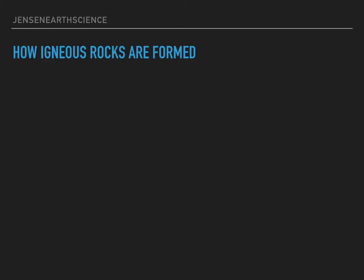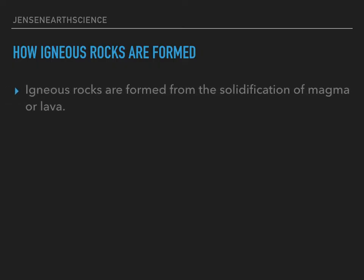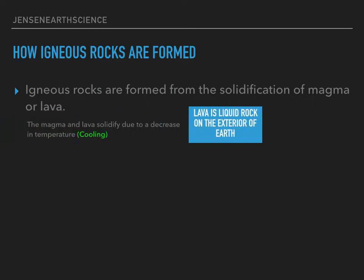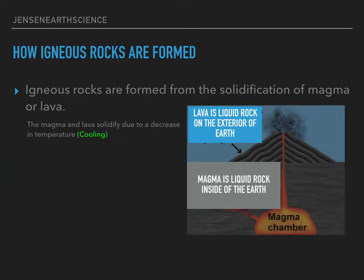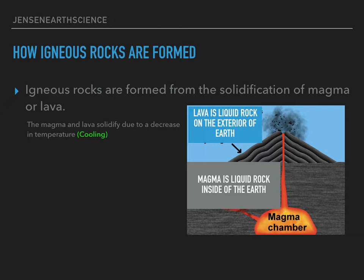How are igneous rocks formed? Igneous rocks are formed from the solidification of either magma or lava. Magma and lava are two different things. The magma and lava solidify due to a decrease in temperature or cooling. Lava is liquid rock on the exterior of earth — mostly we're going to find that coming out of a volcano. Magma, on the other hand, is liquid rock inside of the earth.